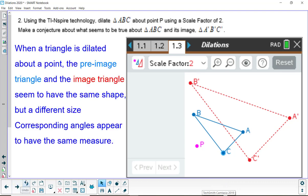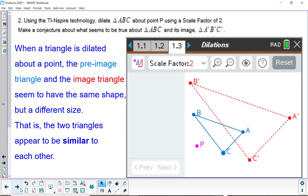For the answers, when a triangle is dilated about a point, the pre-image triangle in blue and the image triangle in red seem to have the same shape but a different size. Corresponding angles appear to have the same measure. That is, the two triangles appear to be similar to each other.